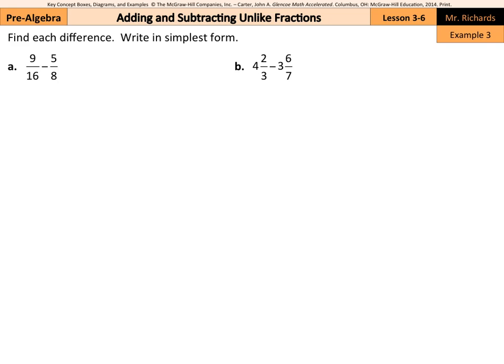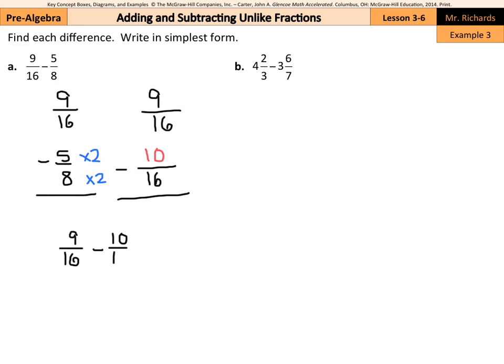Example 3 is asking us to find the difference, write in simplest form. So in question A, we have 9 sixteenths minus 5 eighths. Well, our common denominator here is actually just 16. So we can keep the 9 sixteenths for the 5 eighths, multiply by 2 on the top and the bottom, and we get 10. Now we do need to be careful. For example, this question, if we were to rewrite it horizontally, is 9 sixteenths minus 10 sixteenths. Of course, that's different than 10 minus 9, it's 9 minus 10.